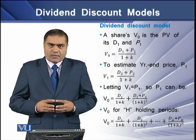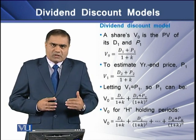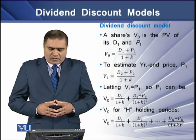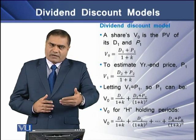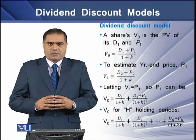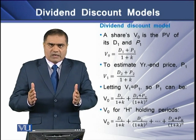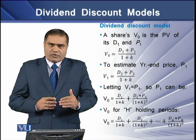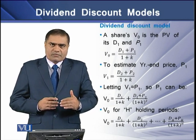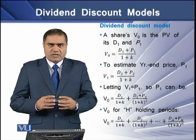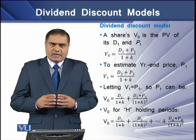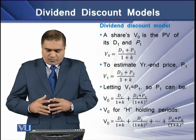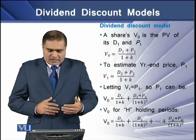To estimate the year-end price P1, we need to determine the intrinsic value at the end of the year, termed V1. V1 equals the dividend expected at the end of the second year plus the sale price of the stock expected at the end of the second year, divided by the capitalization rate. To determine P1, we need the intrinsic value at end of year 1, which is associated with expected dividends and expected sale price at the end of year 2.